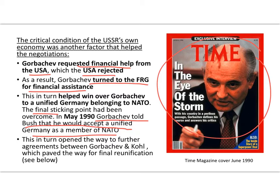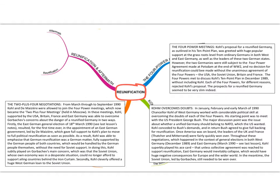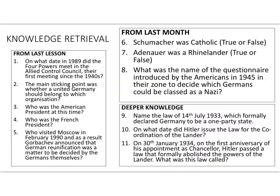In terms of the economic state of his nation, Gorbachev believed this was a risk he was prepared to take. This opened the way to further agreements between Gorbachev and Kohl which paved the way for final reunification. The way was now open to create a unified Germany.